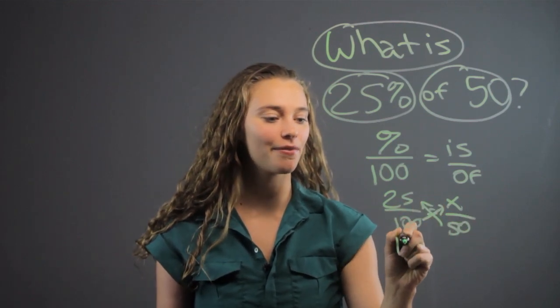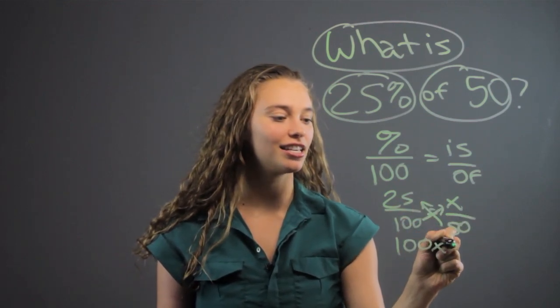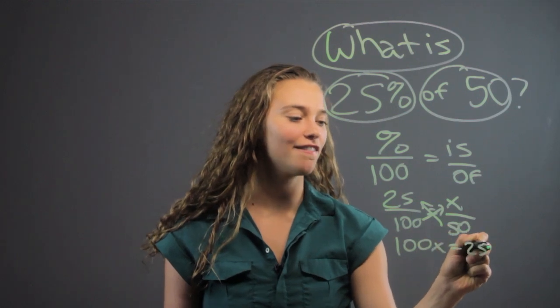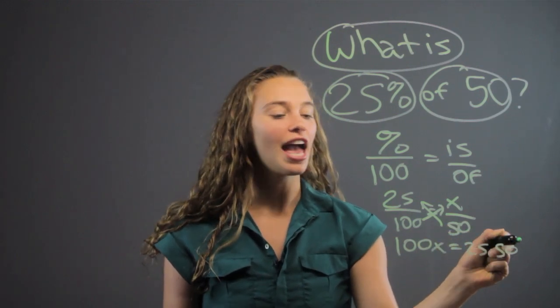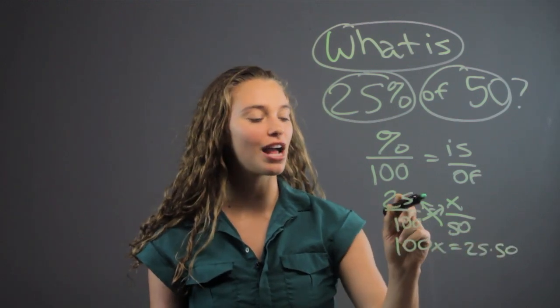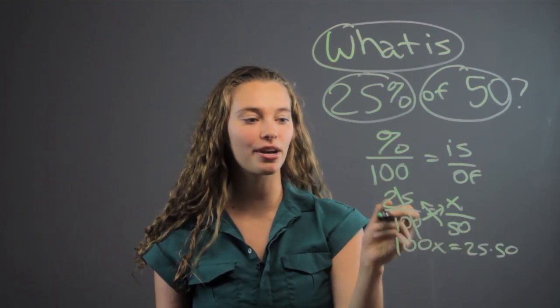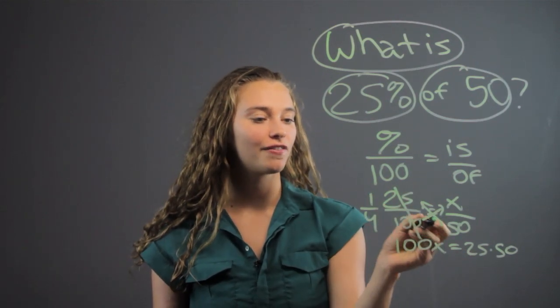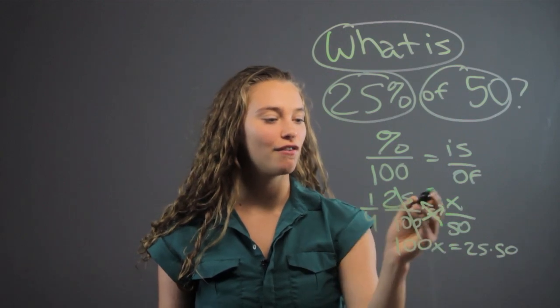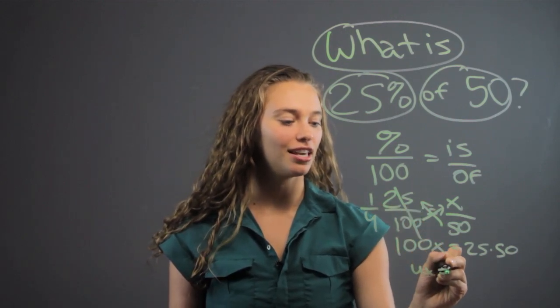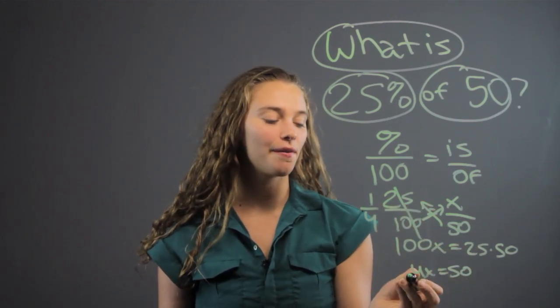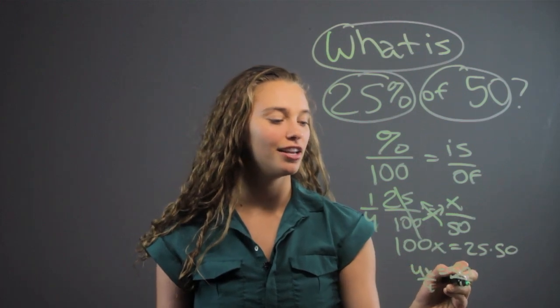Here we have 100X equals 25 times 50. And if you want to simplify first so you don't have to solve such big numbers, you can as well. We know that 25 over 100 is 1 to 4, right? So then we just get 4X equals 50, so we divide both sides by 4, and X is just going to be 50 over 4.